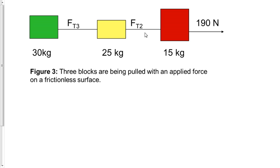Force tension 2 will act on box 25 and 30, and force tension 3 acts on the 30-kilogram box only. Notice how the 190 newtons must act on all three boxes.